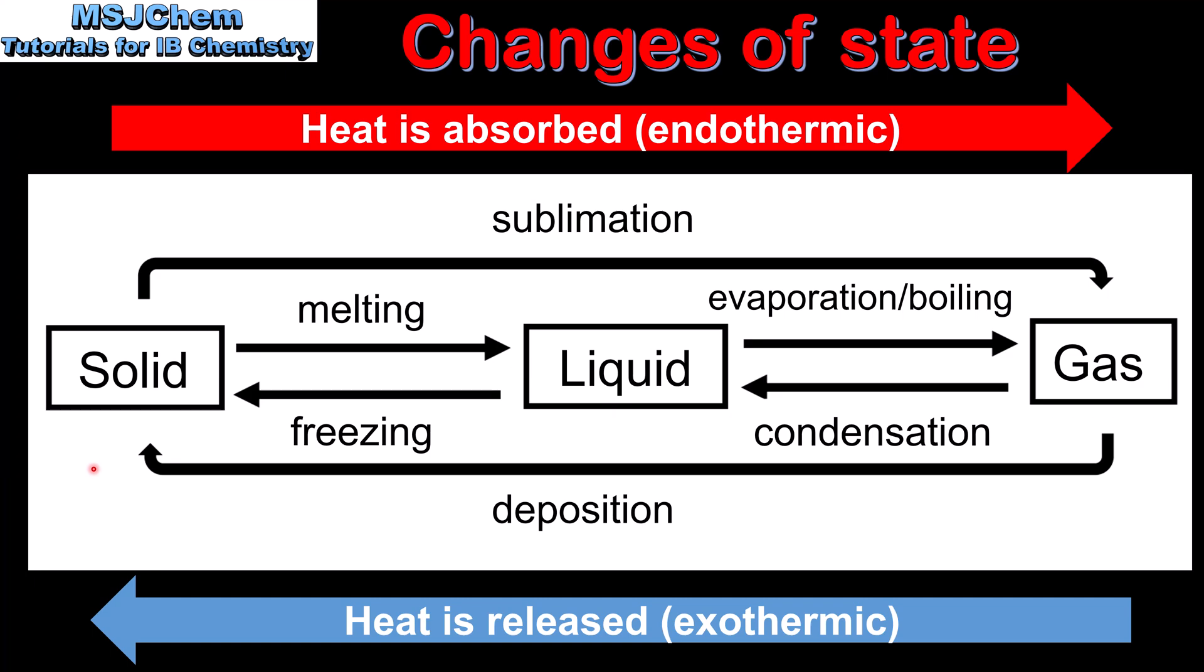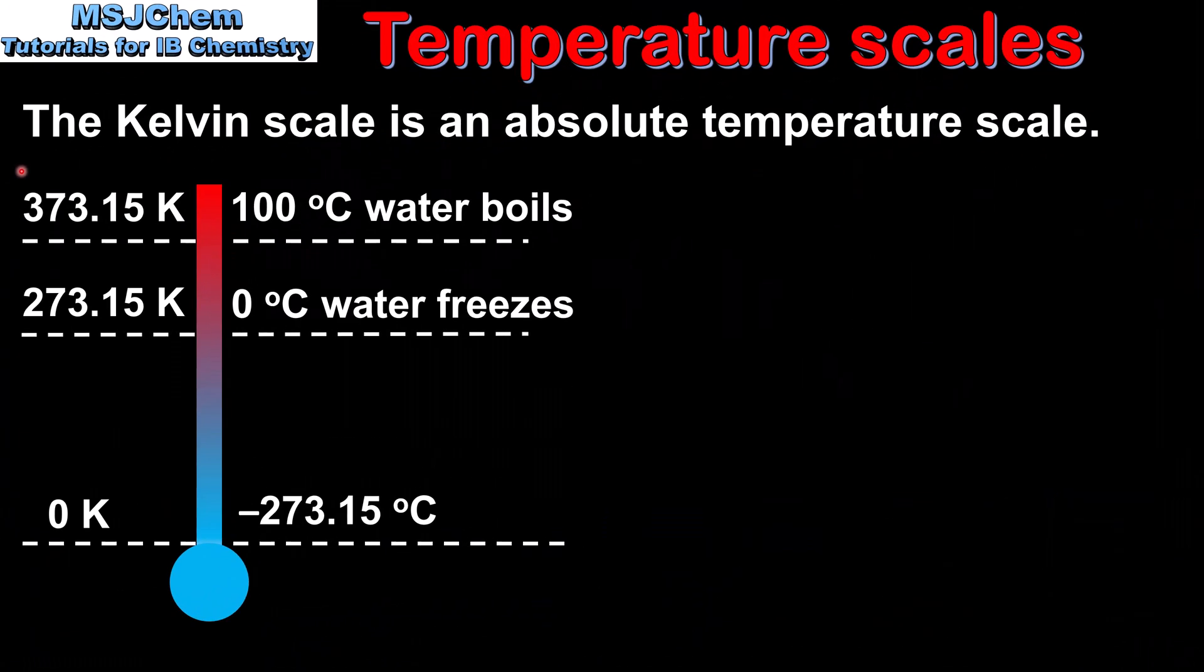Next we'll have a look at some temperature scales. The two temperature scales which you'll use in DP chemistry are the Kelvin scale and the Celsius scale. The Celsius scale is the most common one that you'll use in everyday life, but the Kelvin scale is one that you don't come across that often.